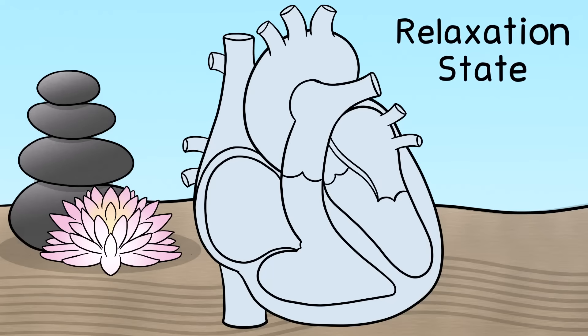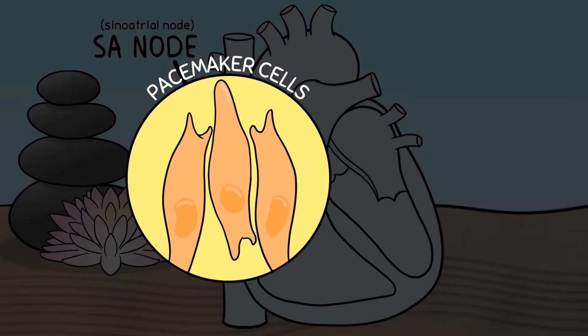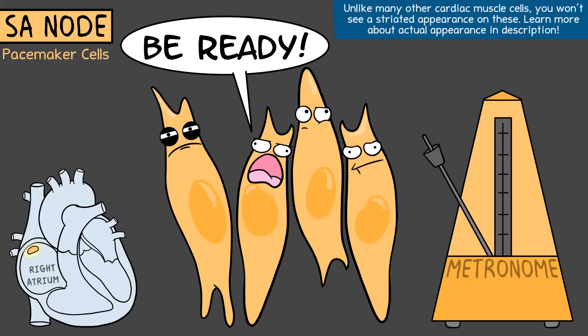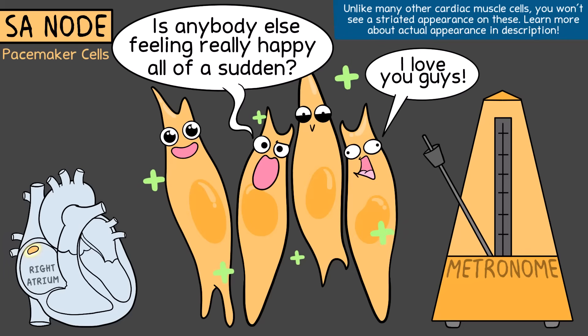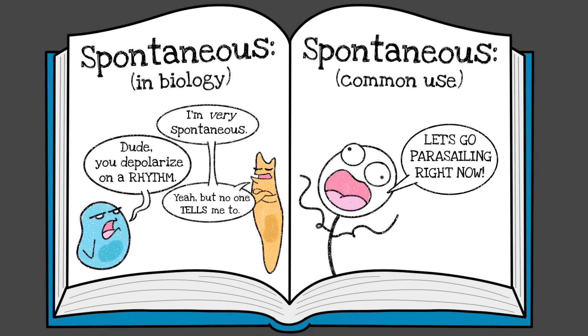If we start in the relaxation state of the heart chambers, the impulse for the heart to contract starts in something called the SA node. It's a spot where specialized conductive cardiac muscle cells, known as pacemaker cells, are concentrated. These pacemaker cells in the SA node are different from other cardiac muscle cells — different in structure and also different because they spontaneously depolarize. The word 'spontaneous' in biology means it occurs without some external stimulus.